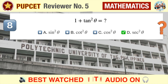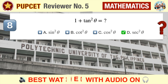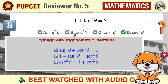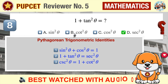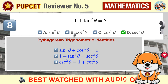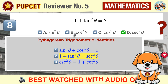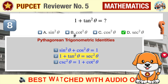The correct answer is D, secant squared theta. This problem involves the Pythagorean trigonometric identities. There are three: (1) sine squared theta plus cosine squared theta equals one; (2) one plus tangent squared theta equals secant squared theta; (3) cosecant squared theta equals one plus cotangent squared theta. Our given problem is exactly the second Pythagorean identity, so no substitutions are needed. The correct answer is secant squared theta. For a refresher on trigonometric identities, watch our dedicated mathematics drills — the link is in the description.